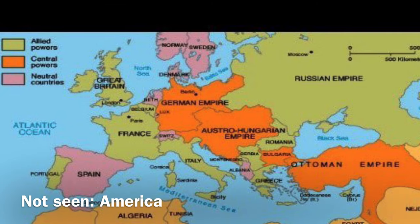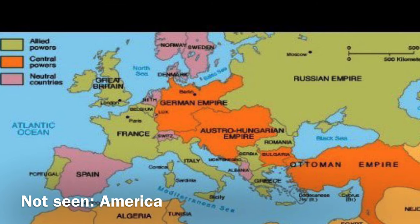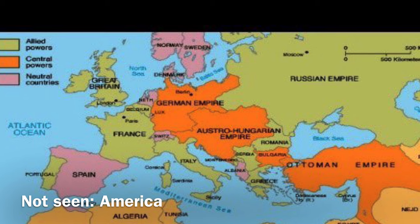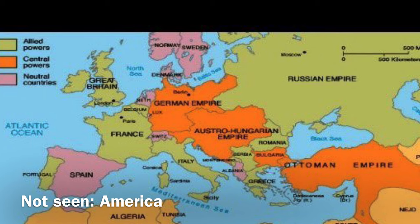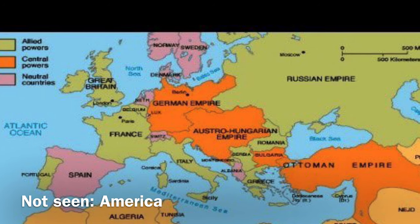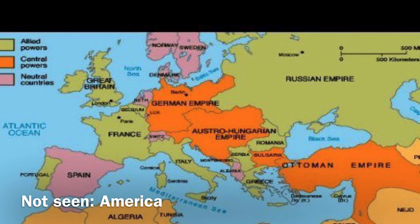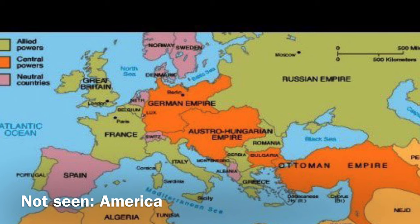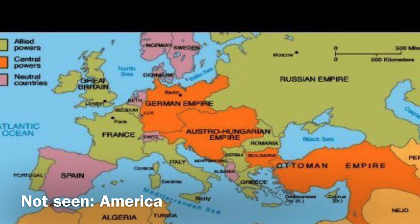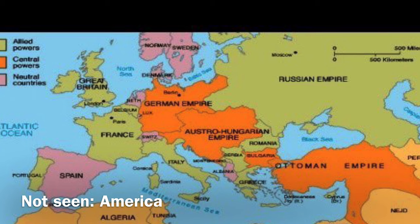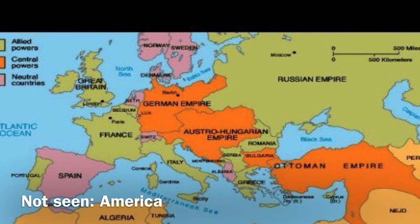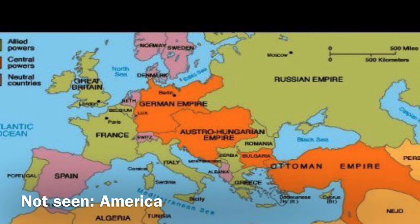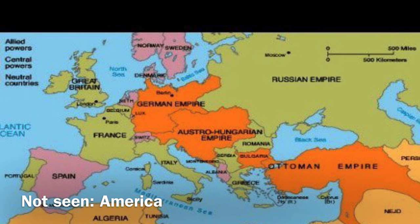Right here is just a map to give a quick recap of who was involved in World War I. For the Central Powers, we have Germany, Austria, Hungary, Bulgaria, and the Ottoman Empire. And they fought against the Allied Powers, who were Great Britain, France, Russia, Italy, Romania, Japan, and the United States, although the United States is not shown on this map.